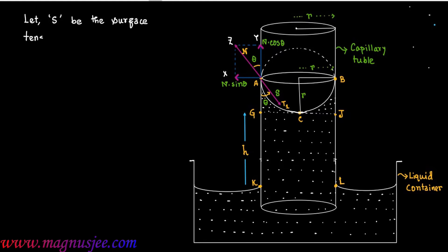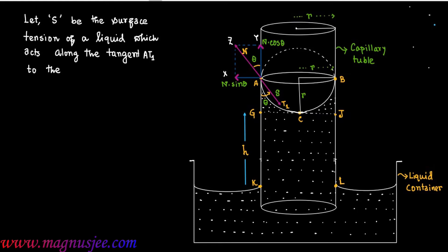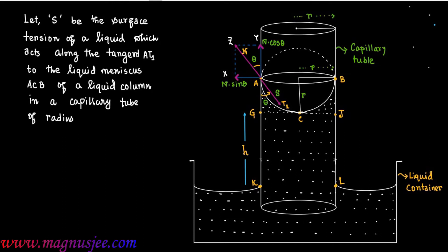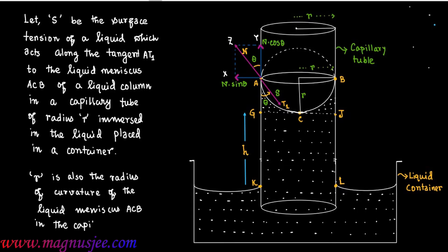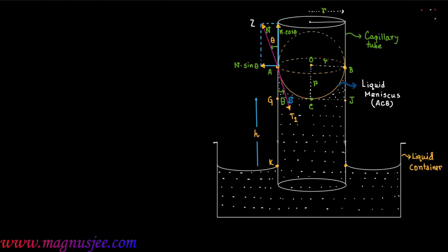Let S be the surface tension of the liquid, which acts along the tangent to the liquid meniscus ACB in a capillary tube of radius R — where R is also the radius of curvature of liquid meniscus ACB. Liquid meniscus means the free surface of liquid.